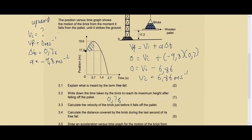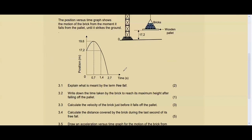Question 3.4: calculate the distance covered by the brick during the last second of its free fall. Be very careful — it asks for the last one second. The total journey time is 2.7 seconds, so just before the last second, the brick is at time 1.7 seconds (that is, 2.7 − 1 = 1.7). Before completing the last second, the brick would have already traveled for 1.7 seconds.